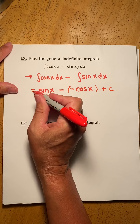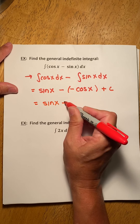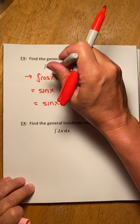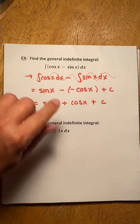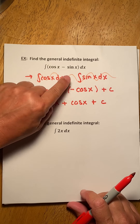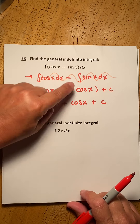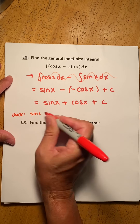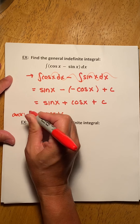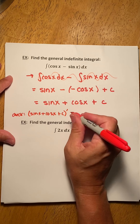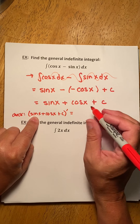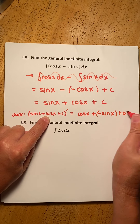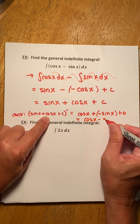Be careful: the derivative of cosine is negative sine, so we actually need a negative here. Plus C. So my answer is sine of x plus cosine of x plus C. Generally I would skip the intermediate step and just say: the antiderivative of cosine is sine, minus the antiderivative of sine which is negative cosine, and that becomes plus cosine plus C. You can check: the derivative of sine of x plus cosine of x plus C gives cosine of x plus negative sine of x plus zero, which is cosine of x minus sine of x — what we started with.